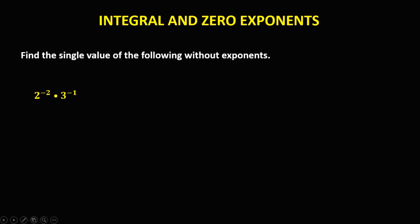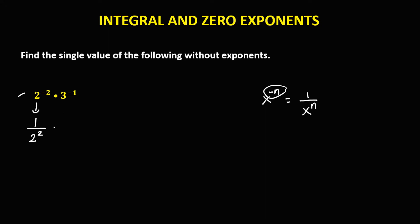First problem: 2 to the power negative 2 times 3 to the power negative 1. We need to rewrite this with positive exponents. Using the rule x to the power negative n equals 1 over x to the power positive n, we rewrite 2⁻² as 1 over 2², then times 1 over 3 to the power positive 1.